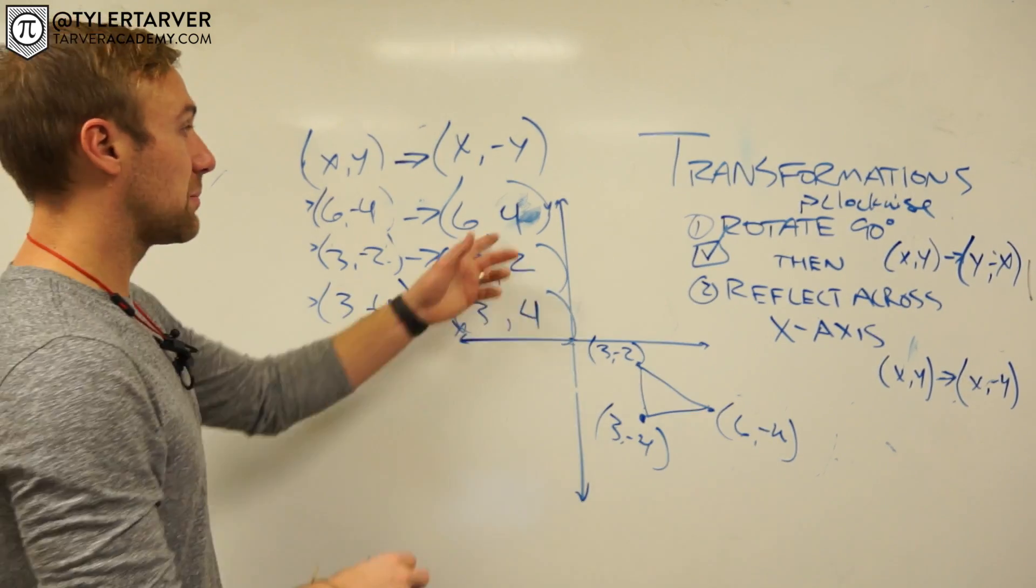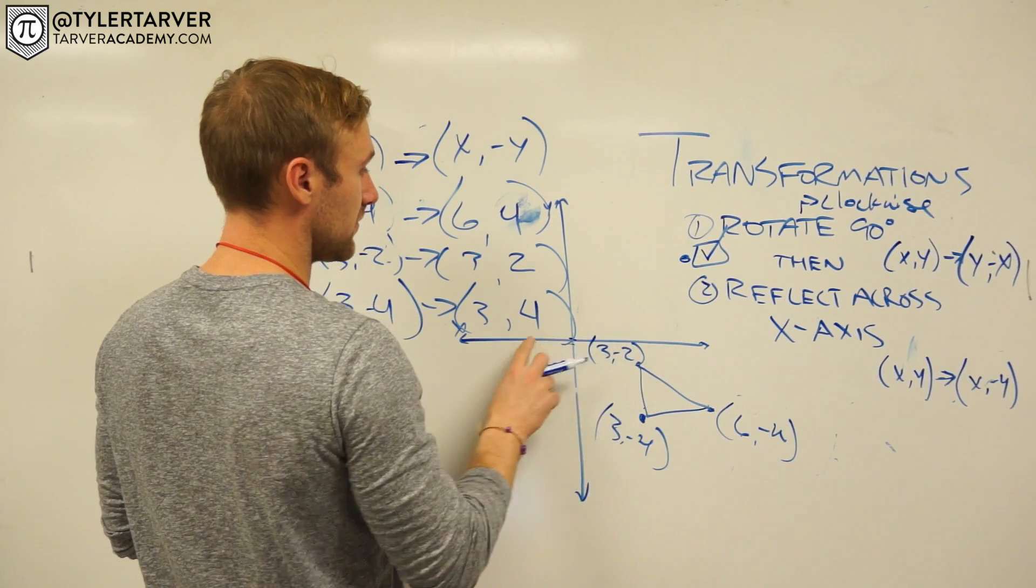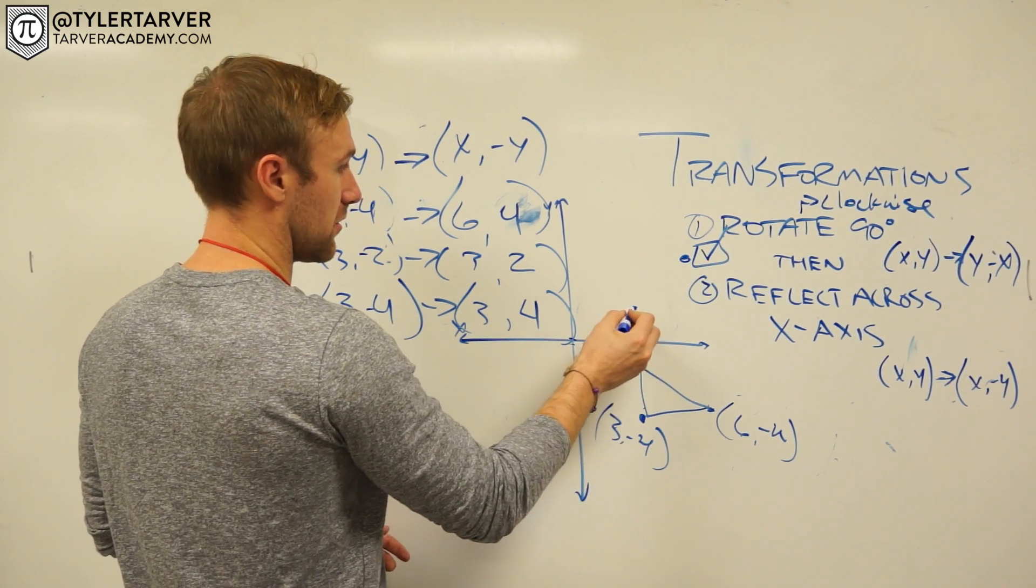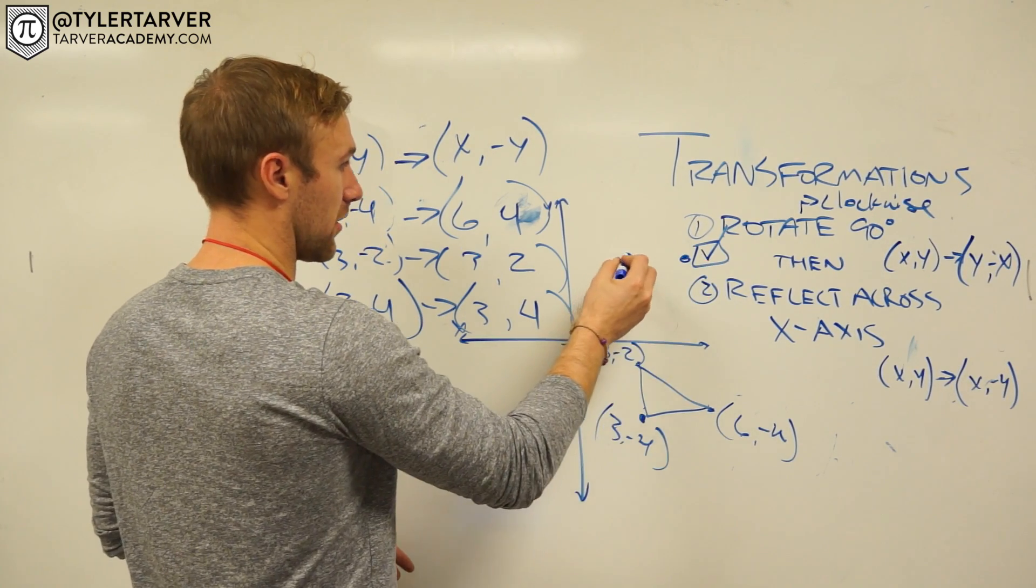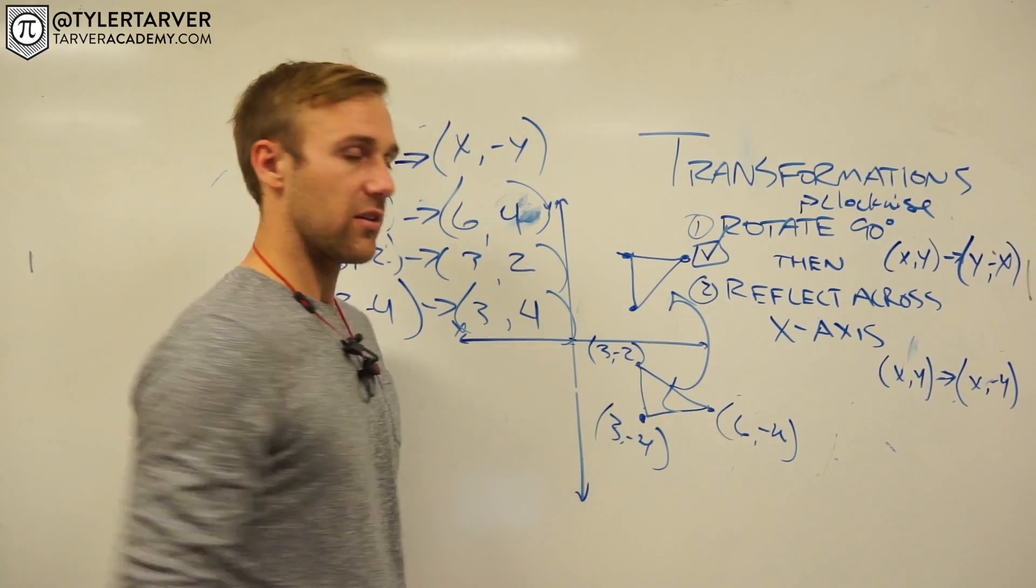So now, I just get to plot these points. So we got, go over 6, up 4. Over 3, up 2. And then over 3, up 4. Boom, boom, boom. That's flipped across that mirror line.